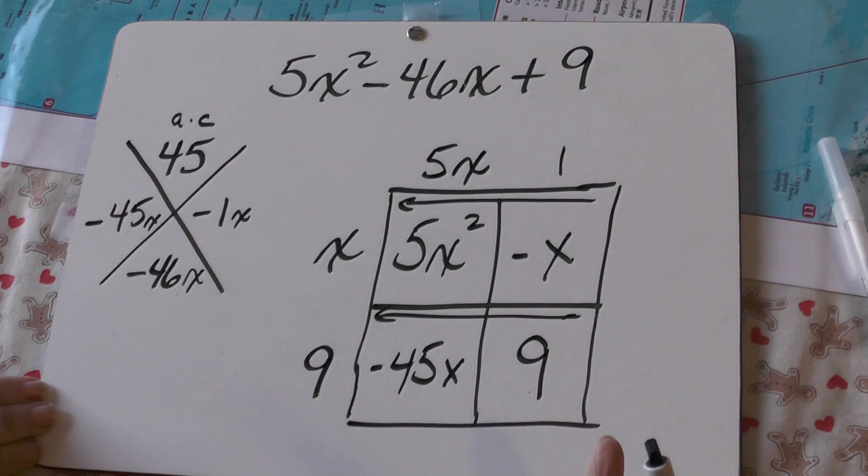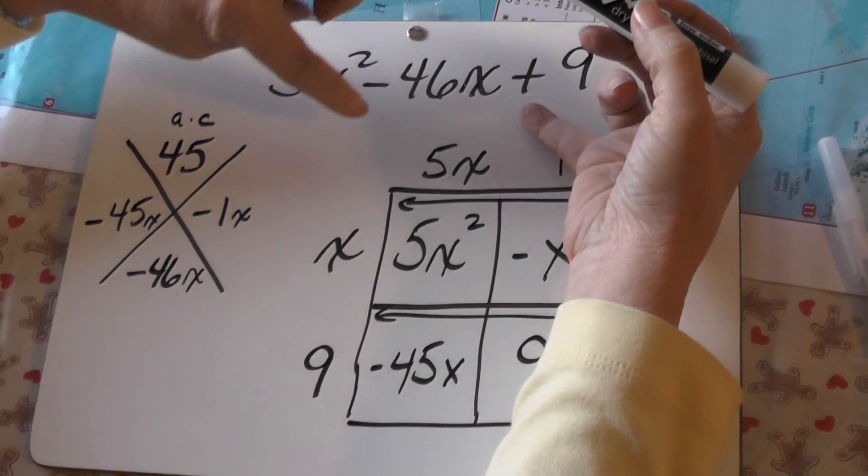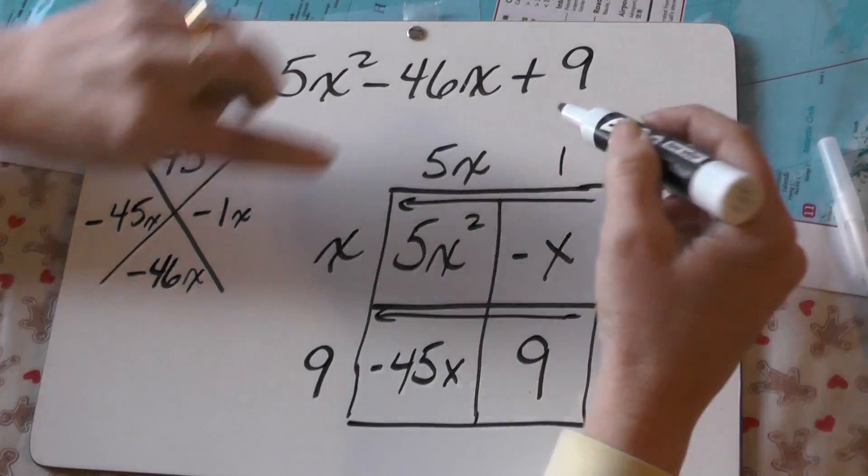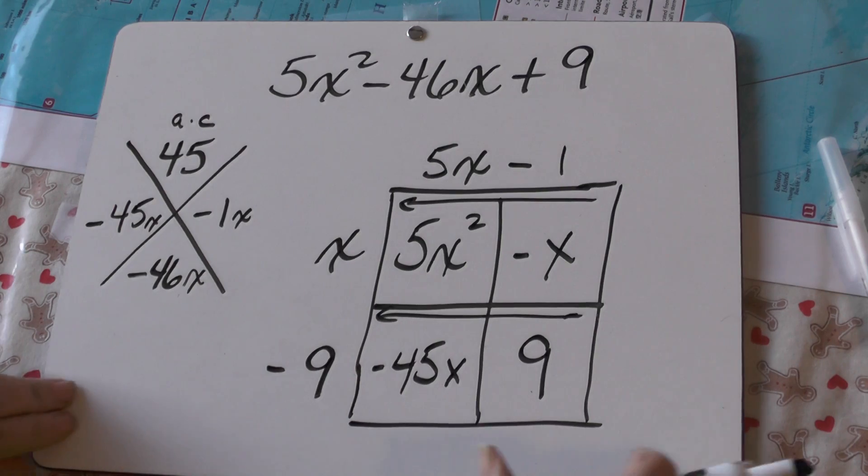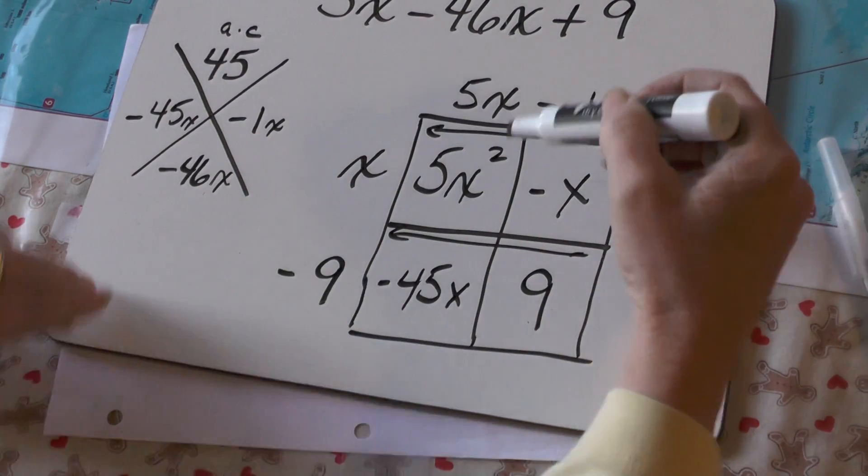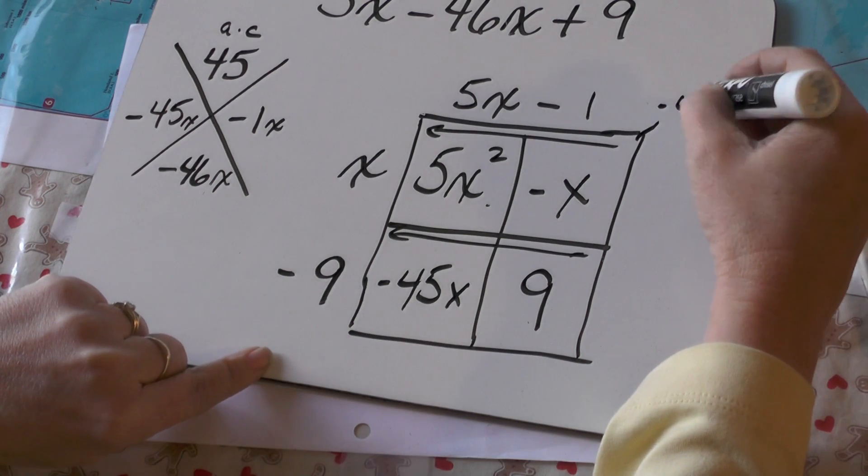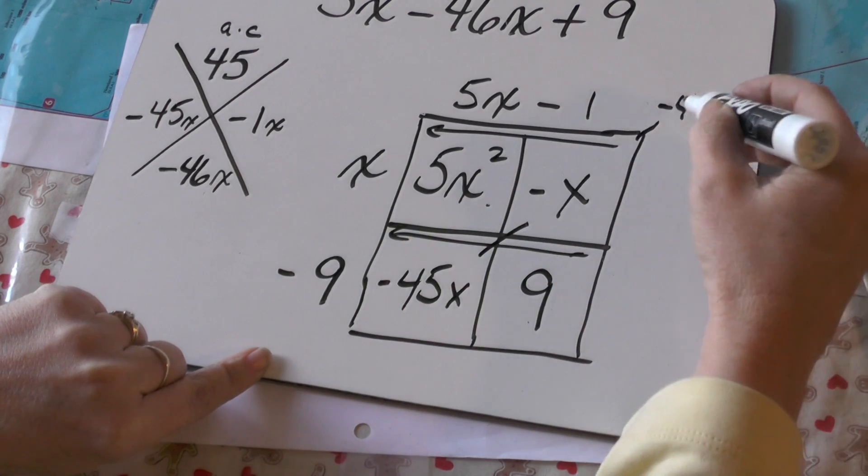And, now, I just have to look at the signs. Well, in order to get positive here and a negative here, one has to be negative. Both of them have to be negative, right? So, that makes it easy. So, let's double check. 5x squared. And, I needed these two to add up to negative 46x, right? These two here. And, they do.